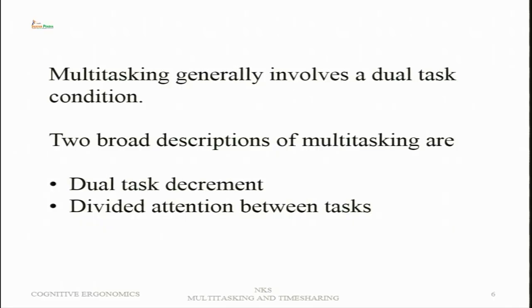For example, a receptionist at a desk converses and welcomes visitors, attends to phone calls, responds to emails, looks at letters, responds to the boss's call, and gives information to the boss. Several things go on, and this happens in any complex system. In laboratory studies and in general, multitasking most often involves a dual task condition — two tasks — because there is an upper limit on how many tasks can be handled by an operator. Generally, this limit is suggested to be four: not more than four tasks can be carried out. When switching is required, attention, memory processes, and decision-making will all be affected.